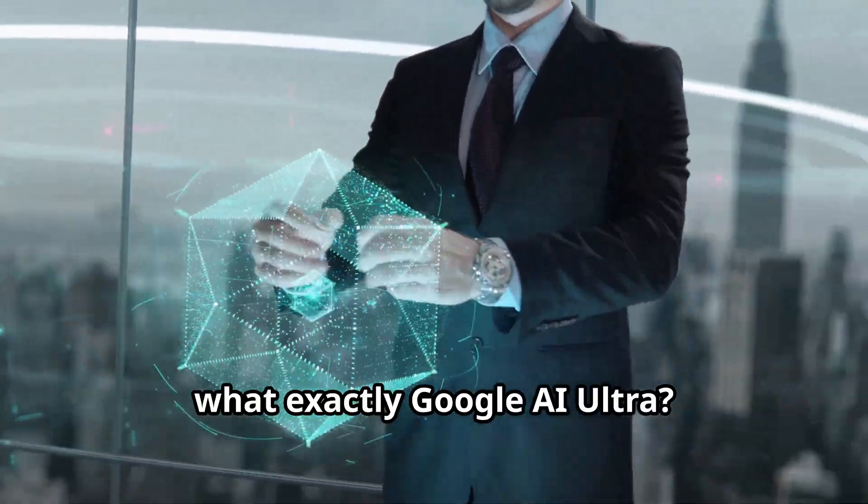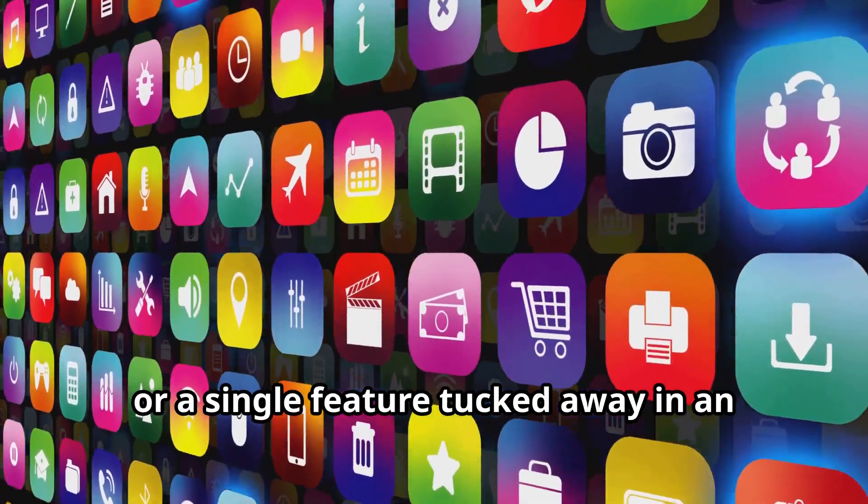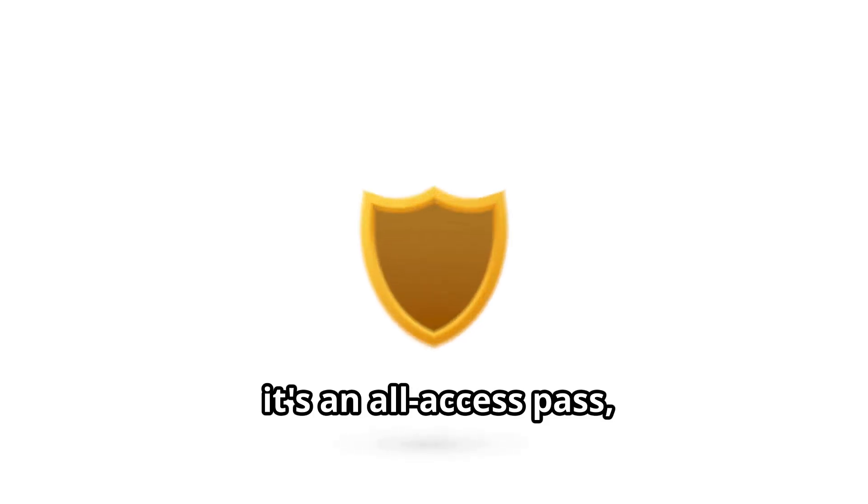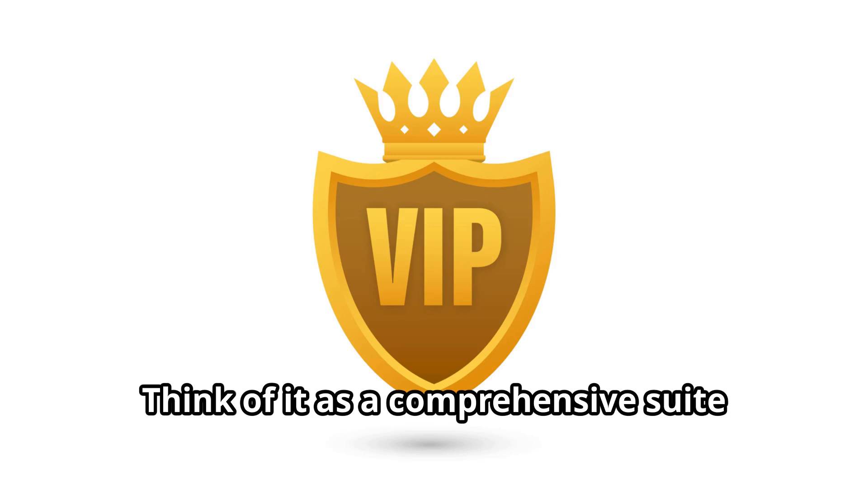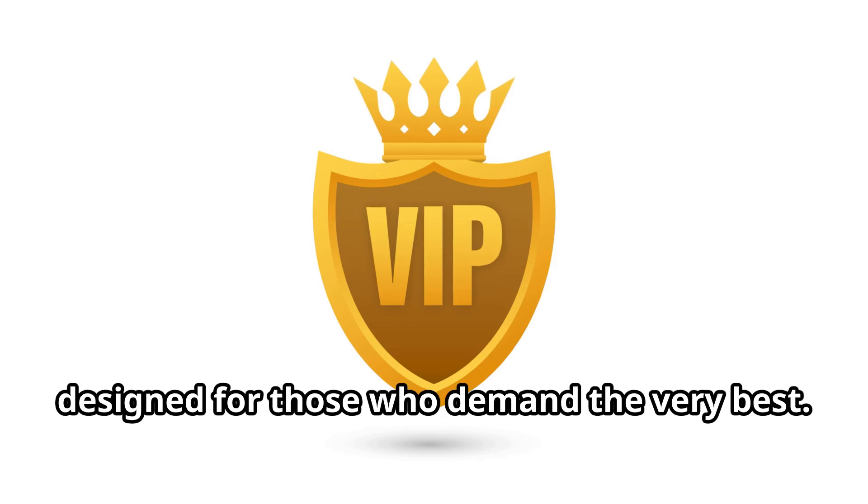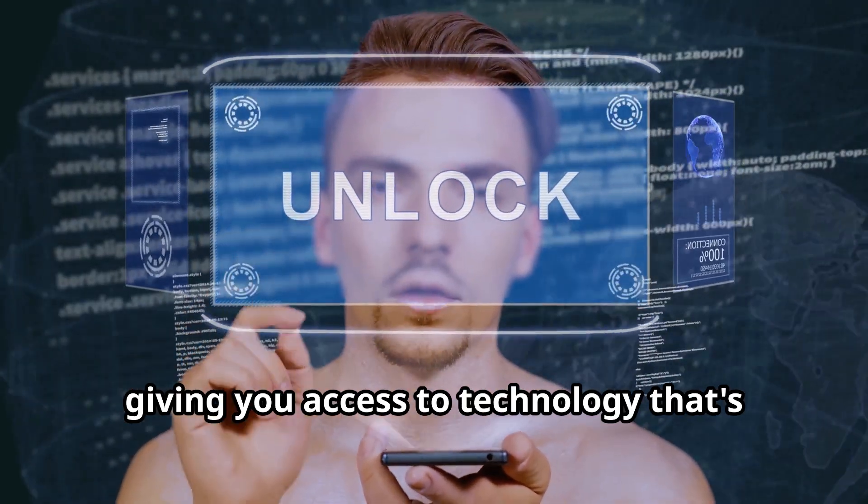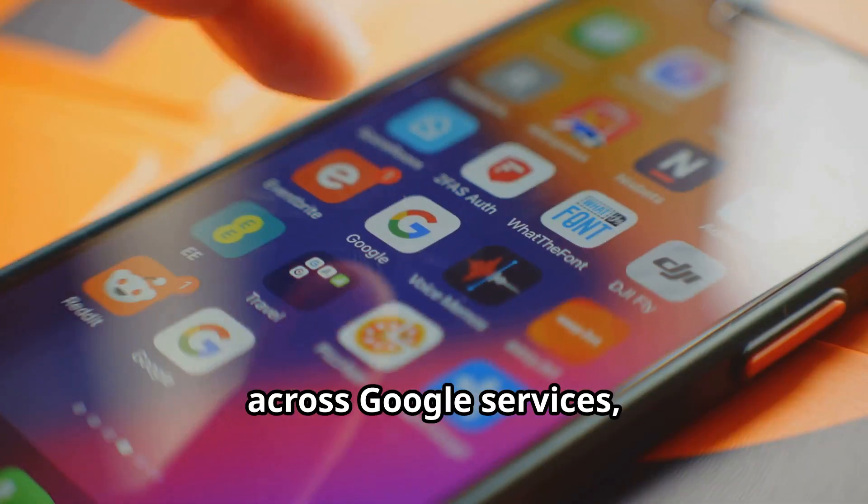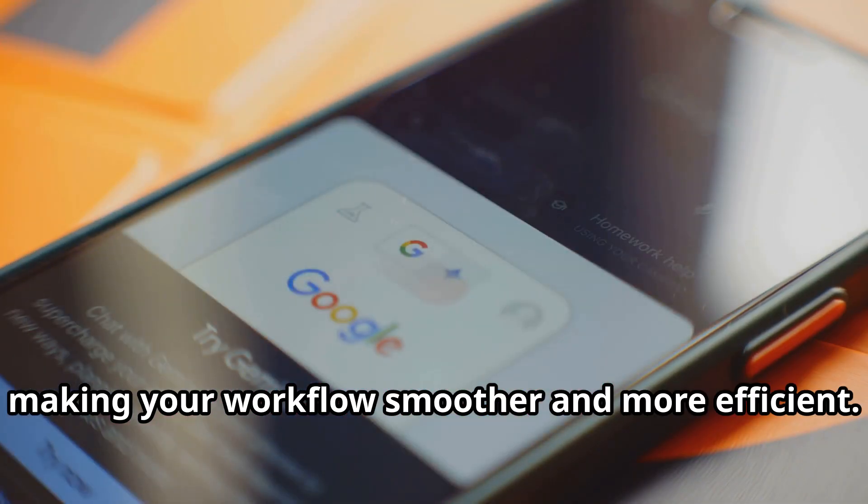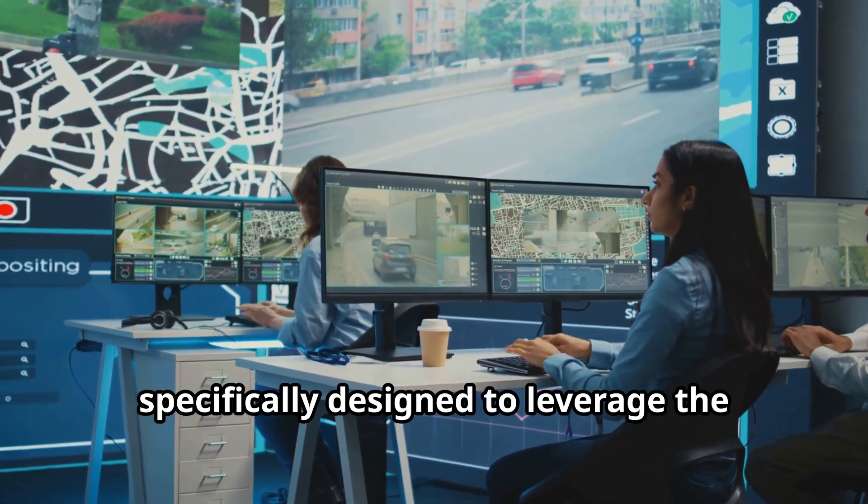So what exactly is Google AI Ultra? What makes it different? What problems does it solve? It's not just one app or a single feature tucked away in an existing service. It's an all-access pass, a golden ticket to Google's most powerful AI tools and capabilities. Think of it as a comprehensive suite, designed for those who demand the very best. The subscription unlocks advanced AI models, giving you access to technology that's normally beyond reach. You'll also experience deeper integration across Google services, making your workflow smoother and more efficient, and you'll gain access to new standalone tools specifically designed to leverage the power of AI Ultra.